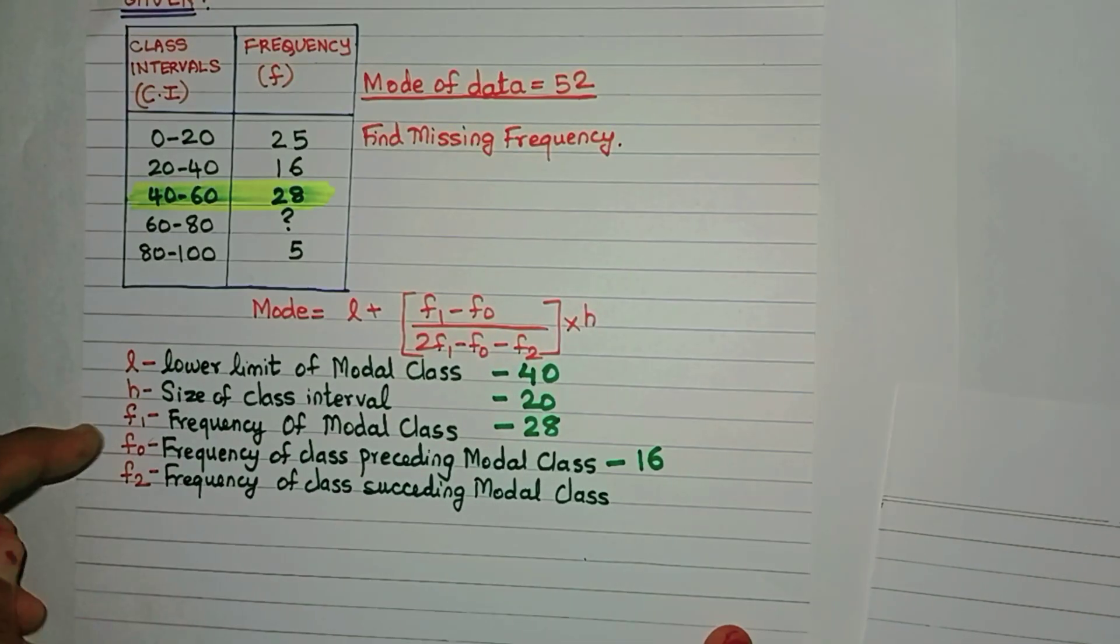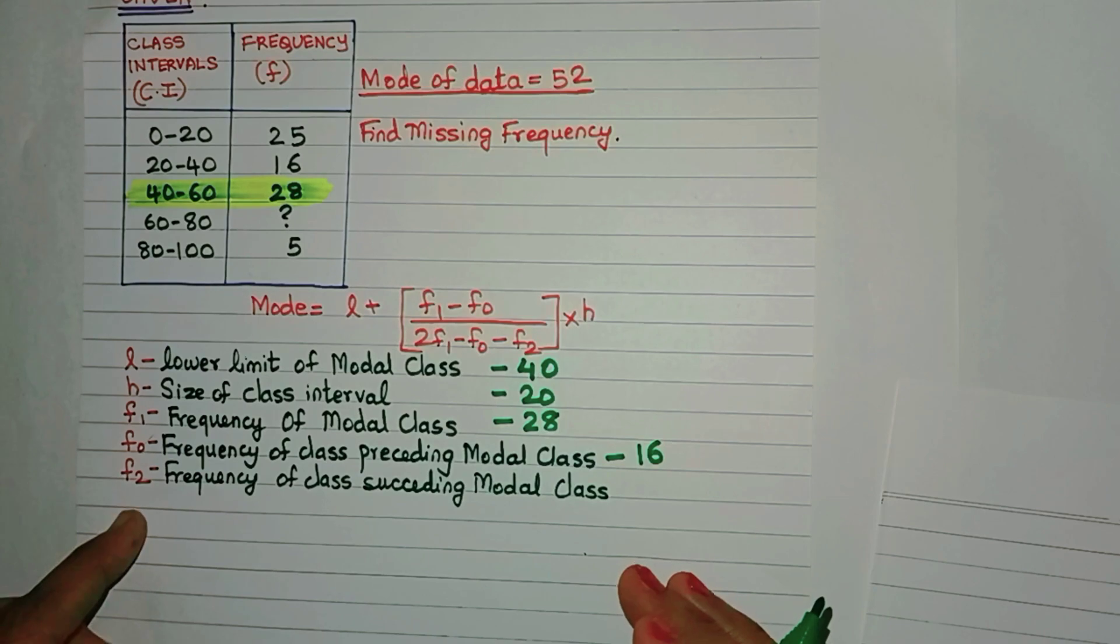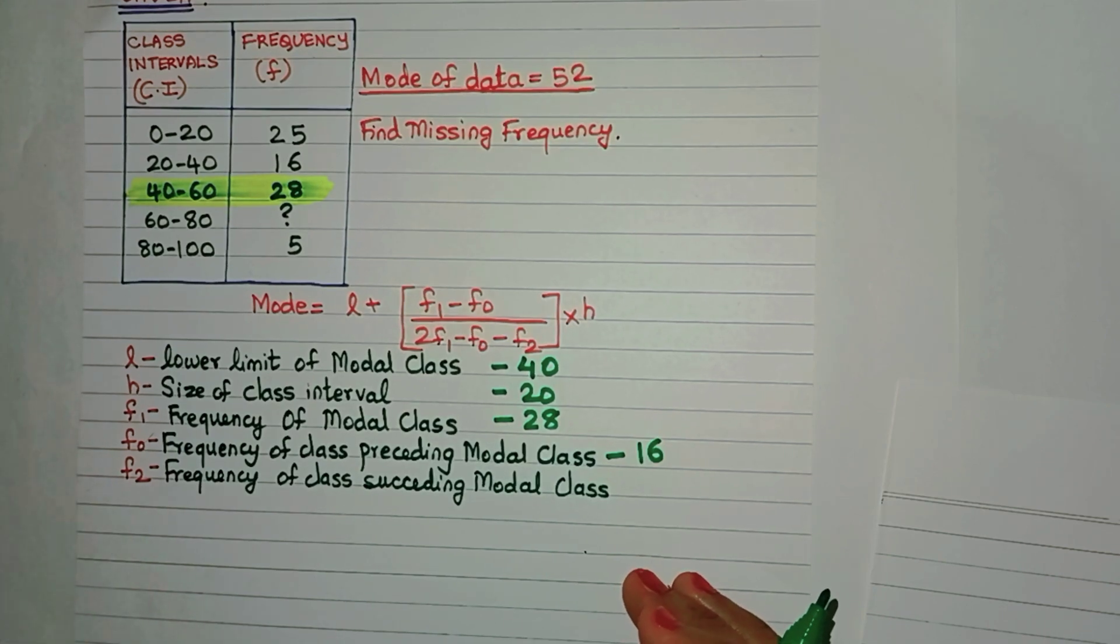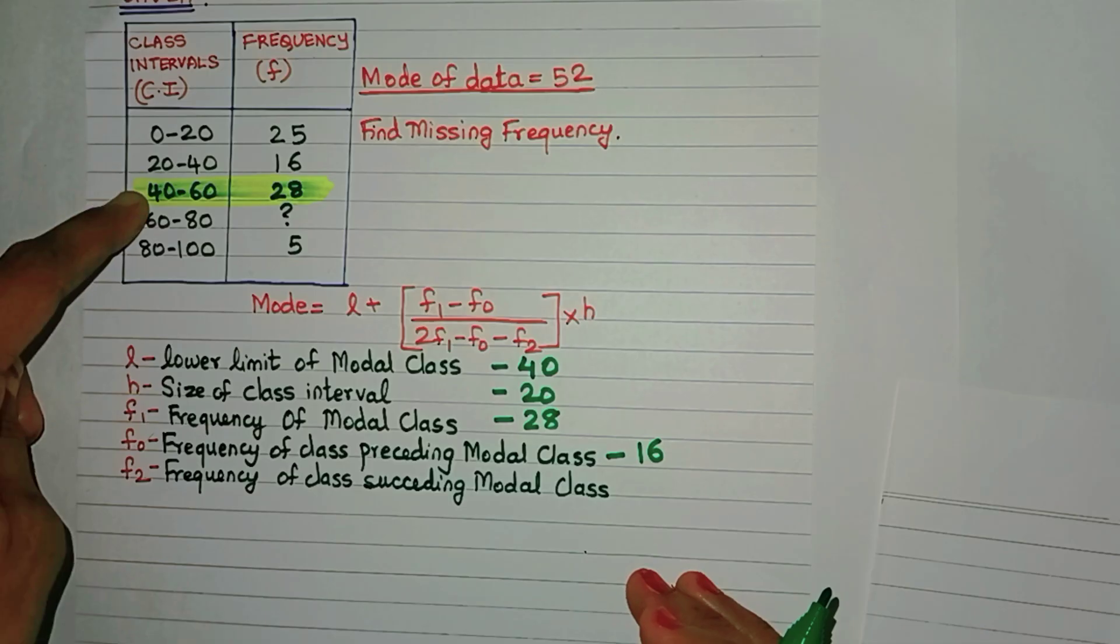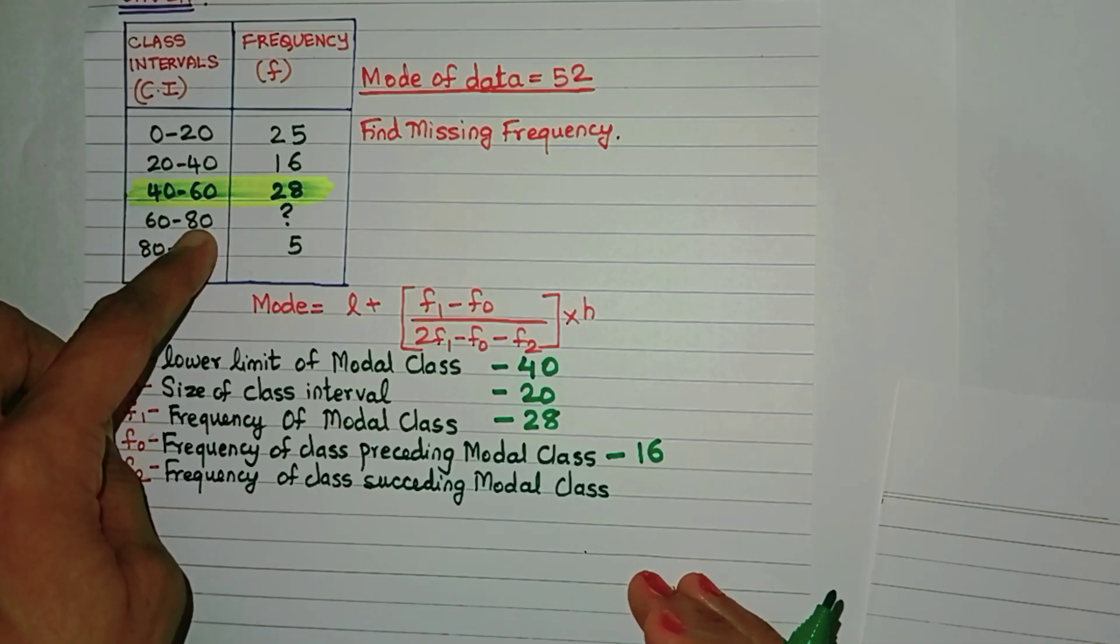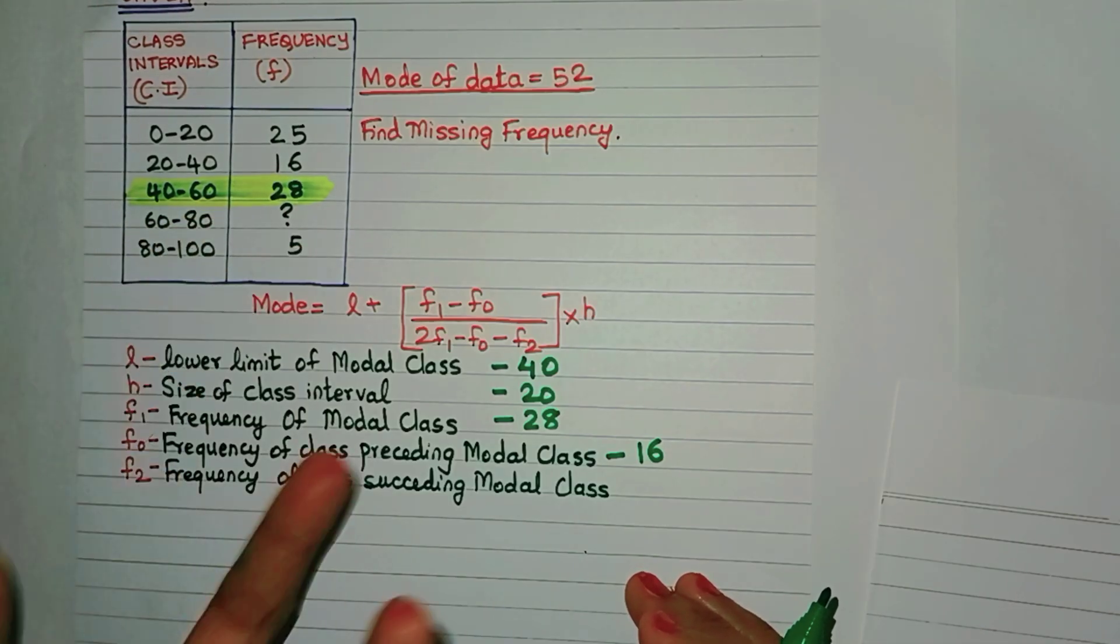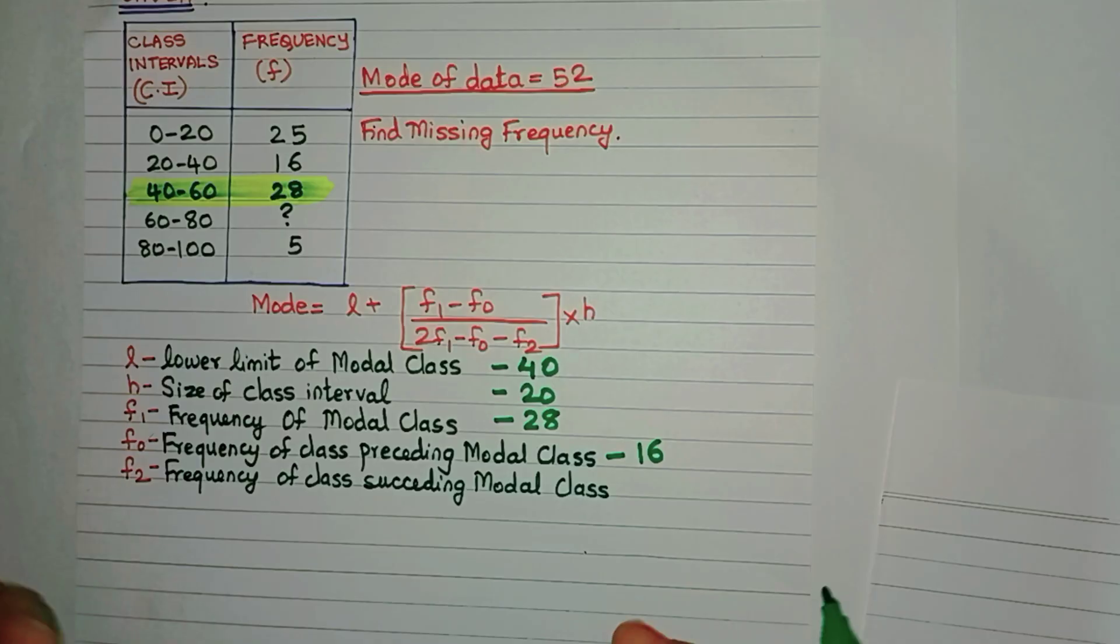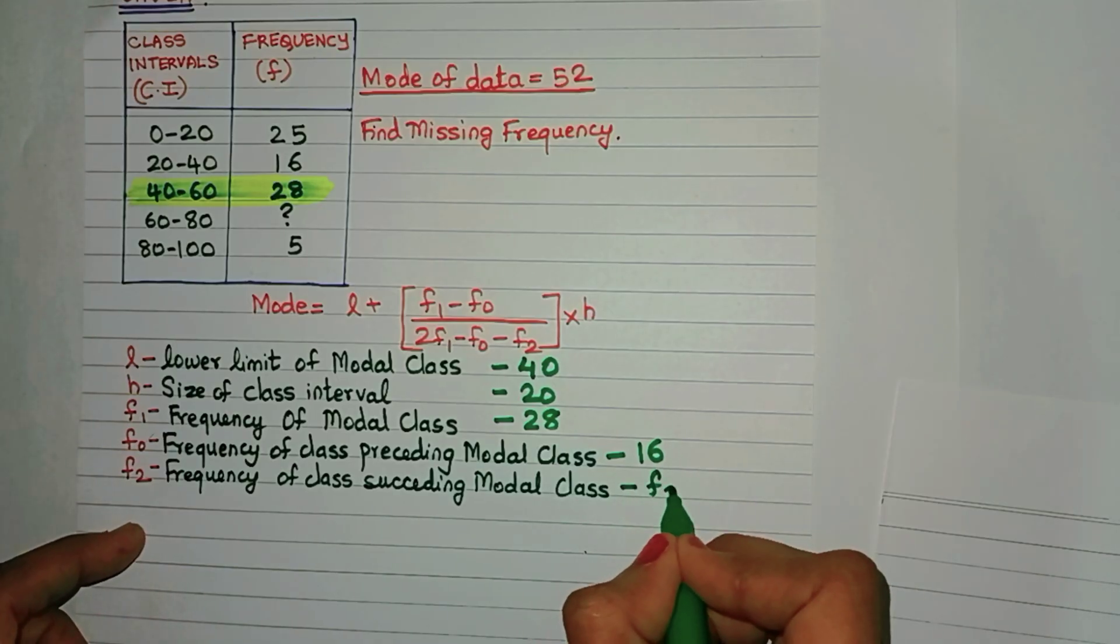Friends, don't confuse between F0, F1 and F2. Now F2 is the frequency of the class that comes immediately after the modal class. So that is 60 to 80. What is its frequency? We don't know. That's what we have to find. So let's just keep it as F2 only.